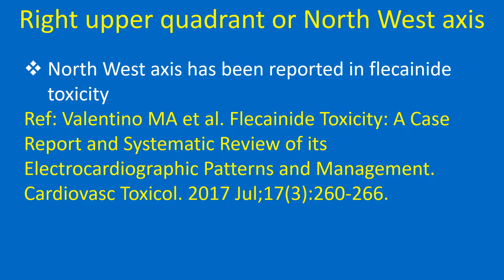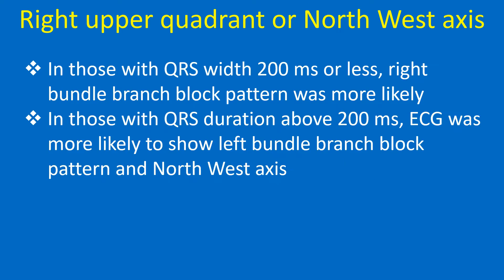A brief review on right upper quadrant or north-west axis: north-west axis has been reported in flecainide toxicity. In those with QRS width of 200 ms or less, right bundle branch block pattern was more likely. In those with QRS duration above 200 ms, the ECG was more likely to show left bundle branch block pattern and north-west axis.